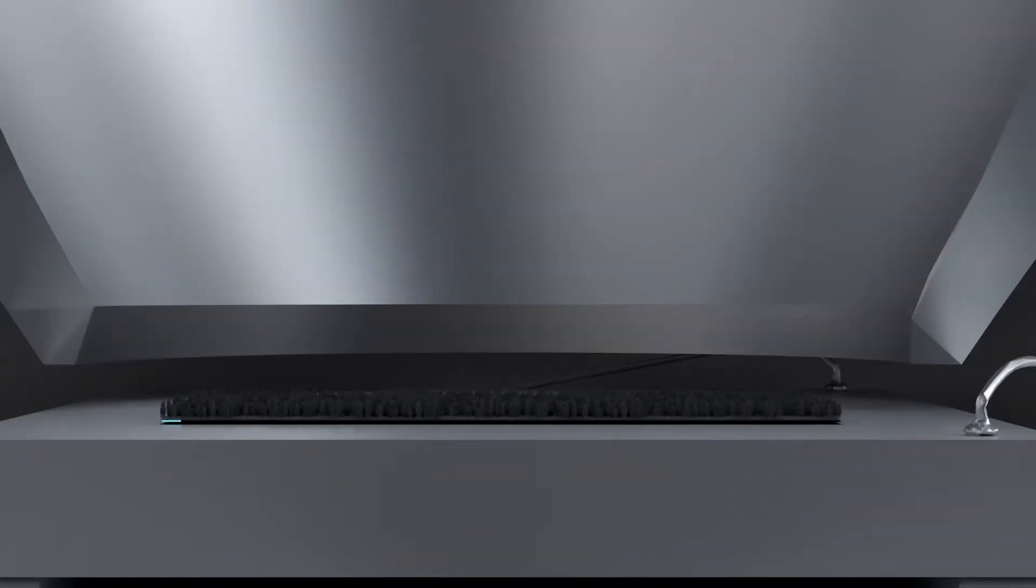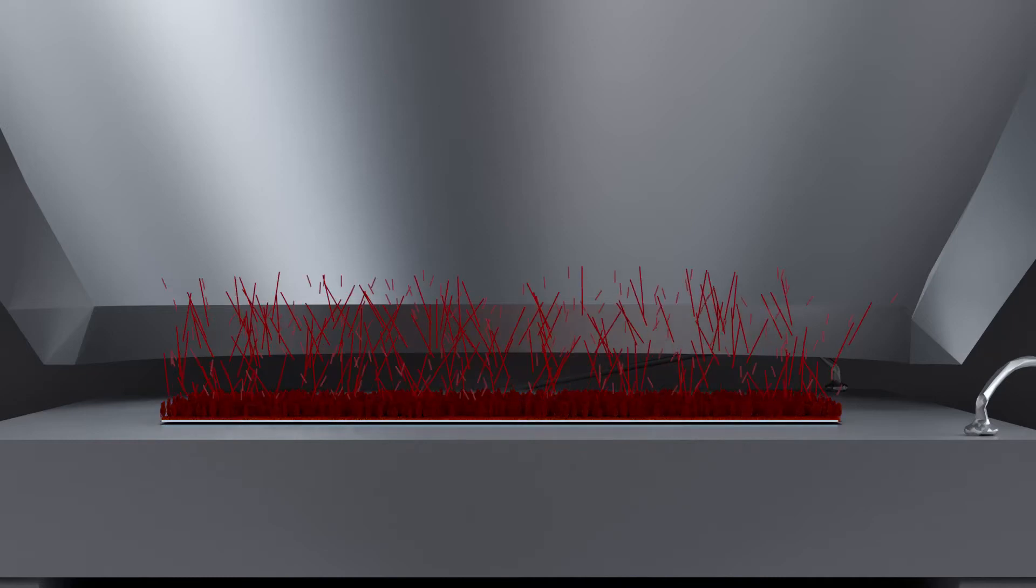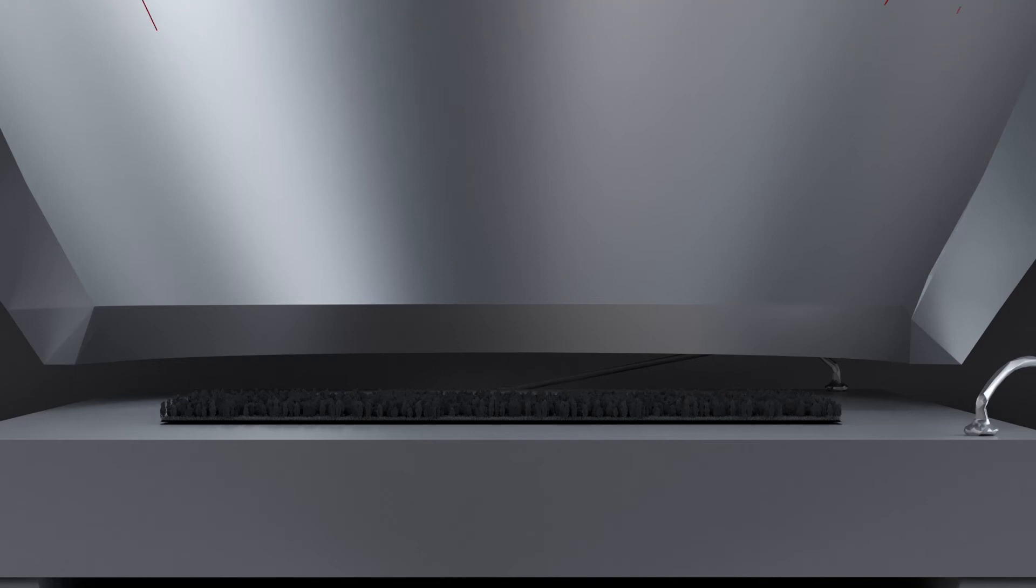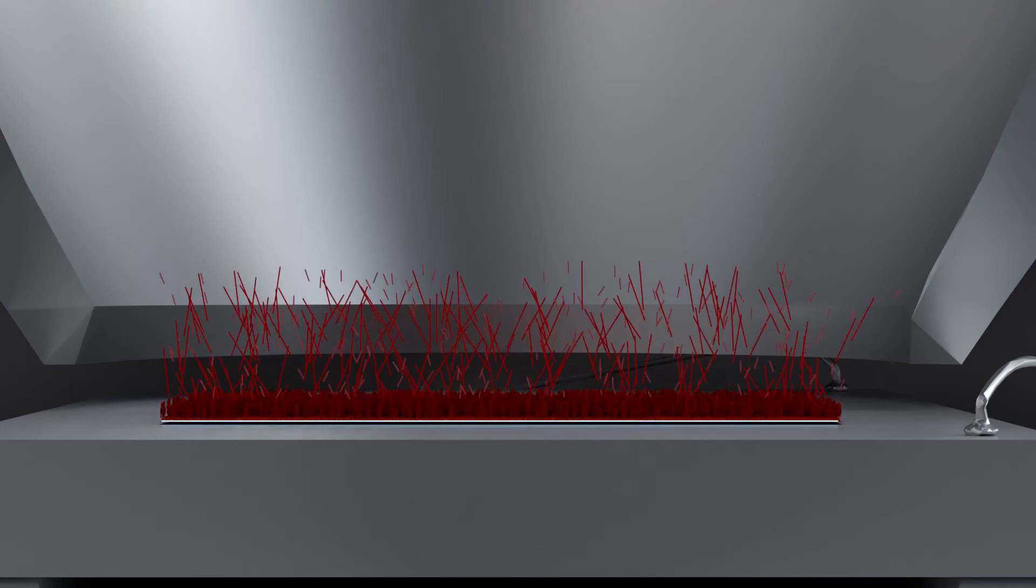When an electric pulse is sent through the heating conductor, they heat up together with the black platinum layer. To dissipate this heat input, the black platinum layer emits thermal, meaning infrared, radiation.